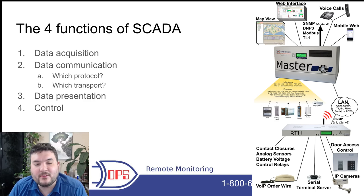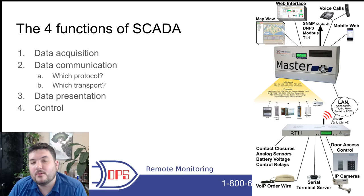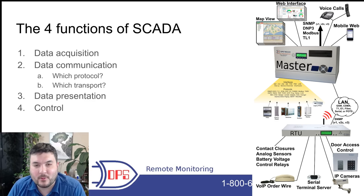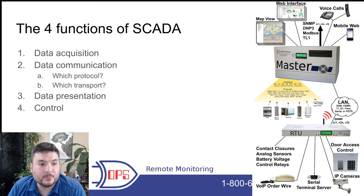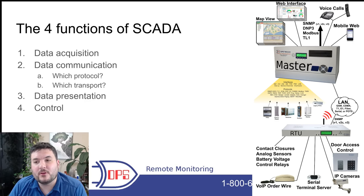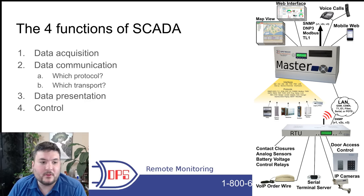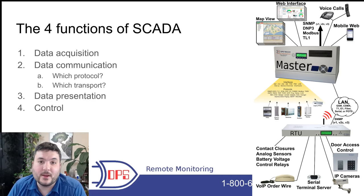Then there is data presentation: once the HMI or master has collected all that data, how is it going to show it to you? Are you going to get a text message? Is it going up on a screen? Do you see a map or diagram showing how your process is flowing? Maybe you have different gauges showing analog values. And then finally there's control — moving in reverse, when you issue a control command from your master, it goes down to the RTU in the relevant location, and the RTU executes it to turn something on or off, change a flow rate, or do just about anything.